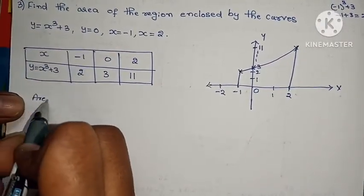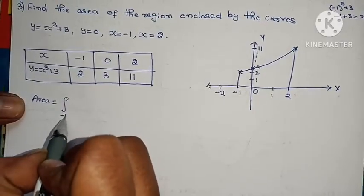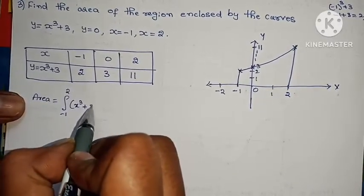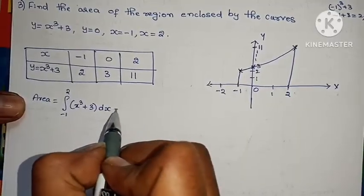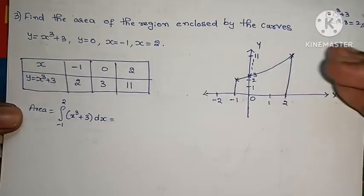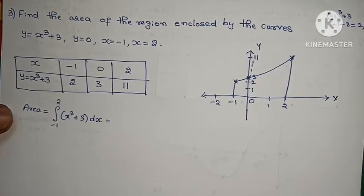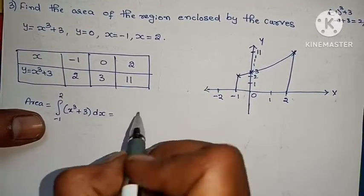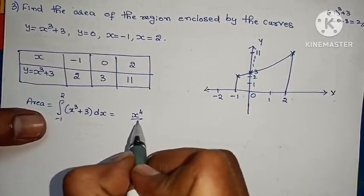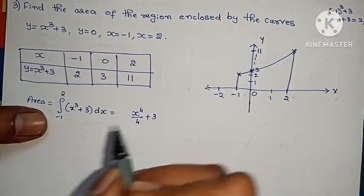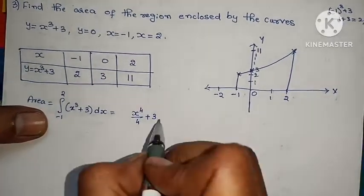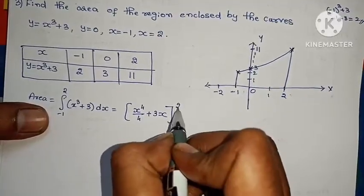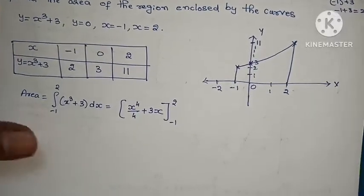Direct area equals integral from −1 to 2 of (x³ + 3) dx. In the positive direction, we apply integration directly. Integral of x³ = x⁴/4, and integral of 3 dx = 3x, evaluated from −1 to 2.